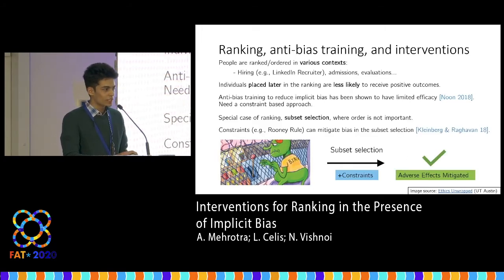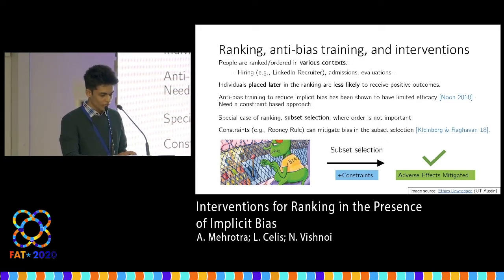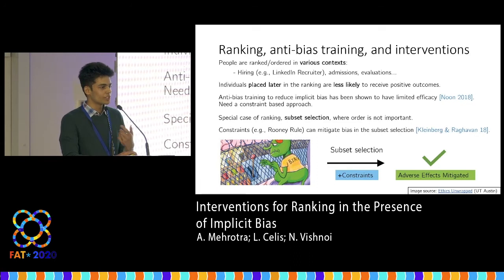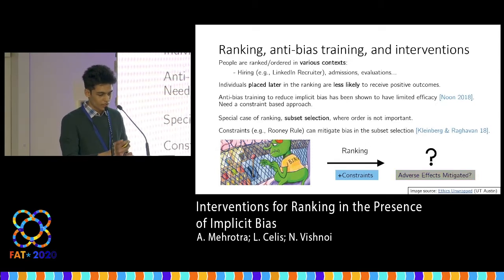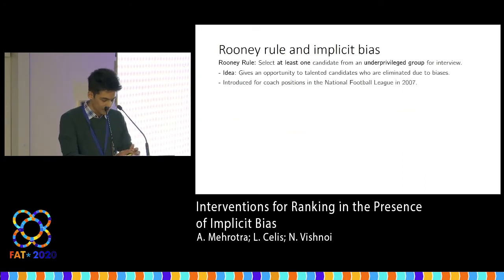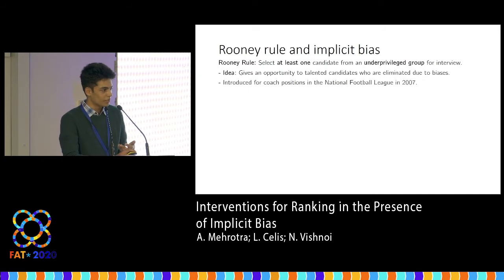This problem — such interventions — has been studied for the subset selection problem, which is a special case of the ranking problem where you have to select a subset of candidates but their order is not very important. One popular constraint used in practice is the Rooney Rule, which forces the hiring committee to interview at least one underprivileged candidate before actually selecting anyone for the job. The idea is that it gives talented underprivileged candidates an opportunity to participate in the selection process, which they might otherwise not receive because of biases in the committee.